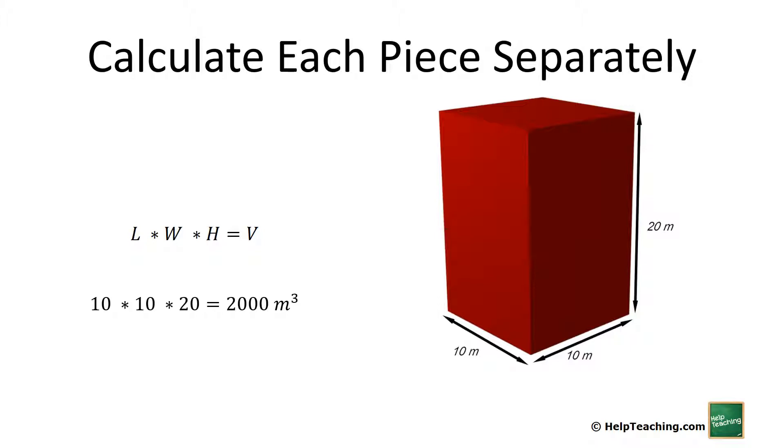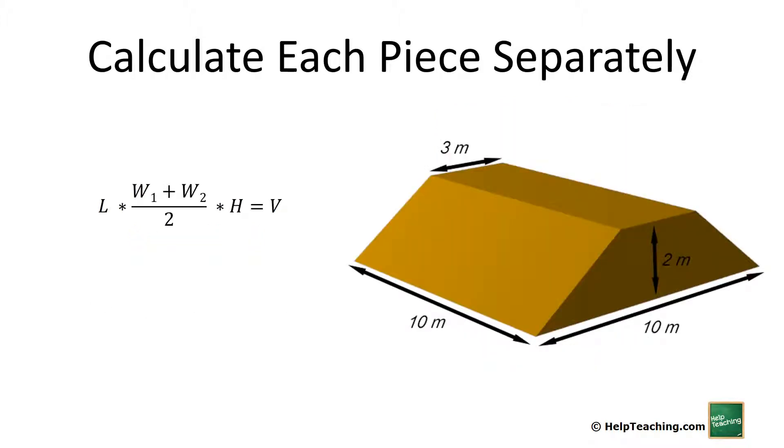Next, let's look at the section between the main body and the steeple. This is very similar to a standard rectangular prism in that we have length times width times height, except the difference this time is we have two widths. So what we do when we have two widths is we just average them.